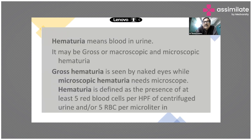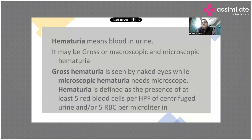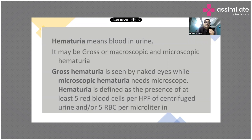Hematuria means blood in the urine. It may be gross hematuria or microscopic hematuria. Gross is also called macroscopic hematuria, which you can see with the naked eye. Microscopic hematuria is when on urine routine examination, we see red blood cells under the microscope. Macroscopic or gross hematuria is when the parent says the child passed urine that is red in color rather than normal — that's visible to the naked eye.